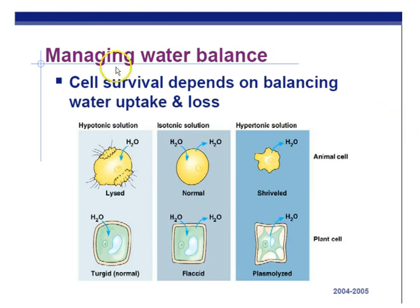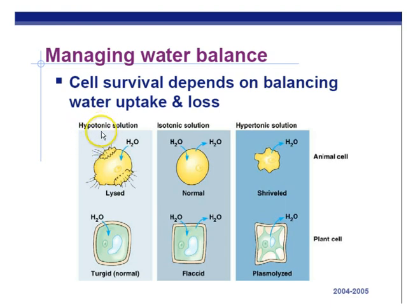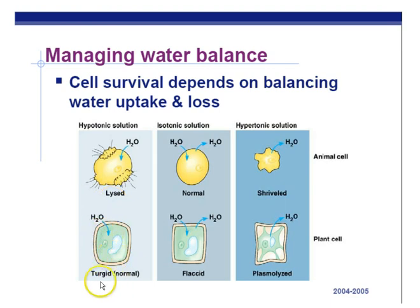In a hypotonic solution — 'hypo' means under, 'tonic' means solutes, so hypotonic means fewer solutes — the outside water is more pure. Water moves from more pure to less pure by osmosis (diffusion of water), from hypotonic to hypertonic. This causes water to enter the cell and can lyse or destroy it — that's why you don't get a pure water transfusion. Plants, having a cell wall, don't burst; their cells just become turgid, helping the plant stay upright.